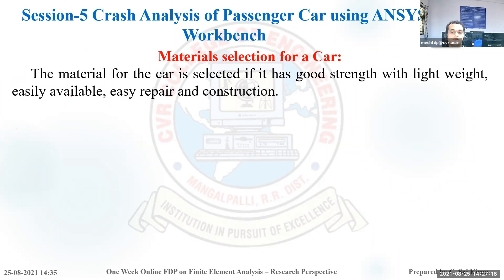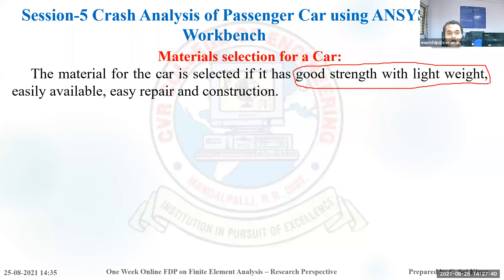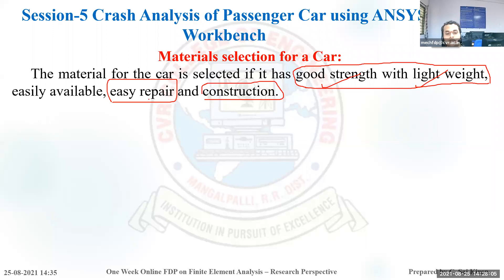For material selection in a car, the metal should have good strength with lightweight. If the metal is heavy, the car's mileage will be reduced. The material must be good strength, lightweight, easily available at low cost, and easily repaired. If any accident occurs, it should be easily repairable.